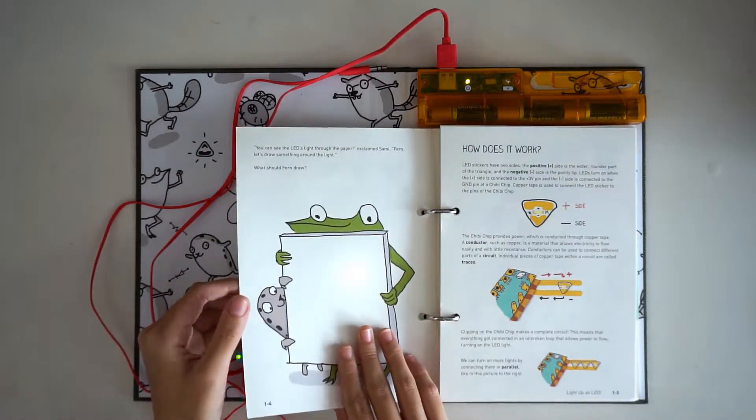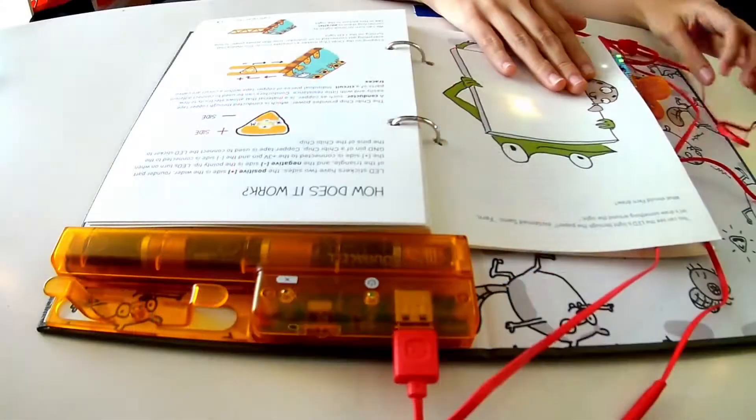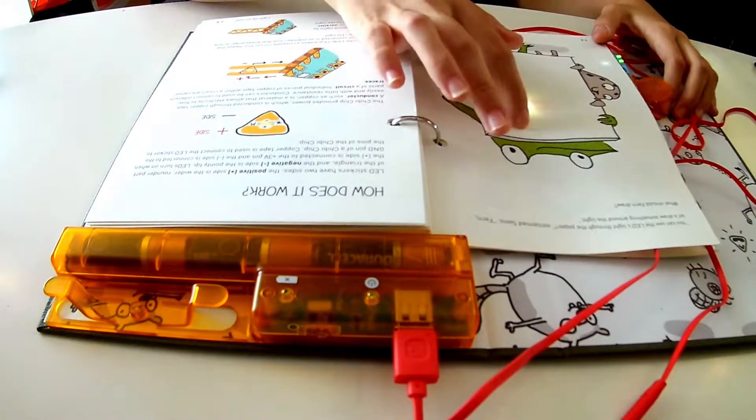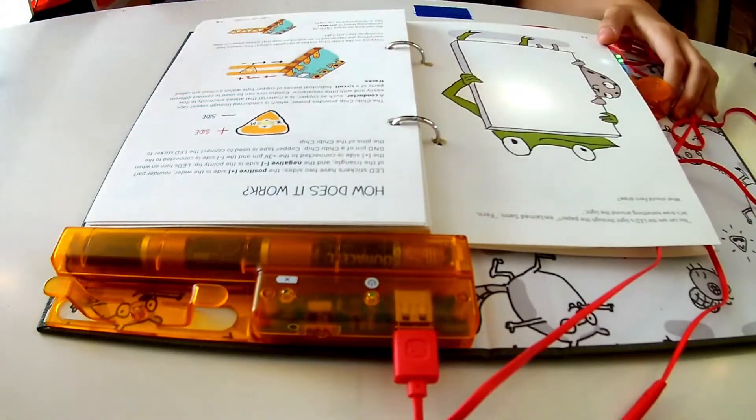Turn the page and you'll see Fern and Sammy holding a canvas. Let's draw a scene around the light. First, use a pencil to mark the position of the light on the page.